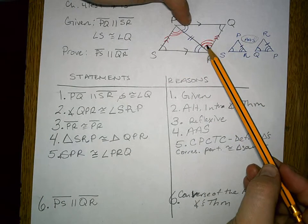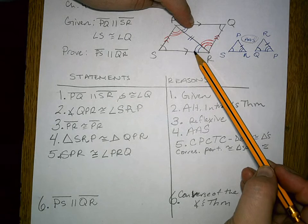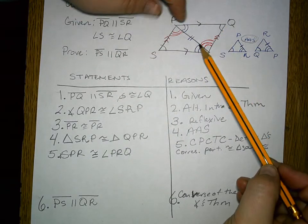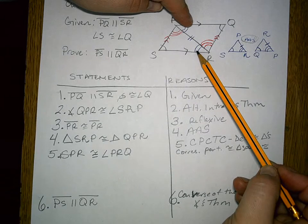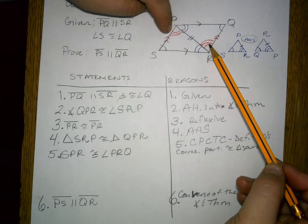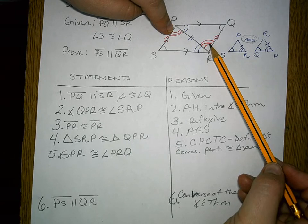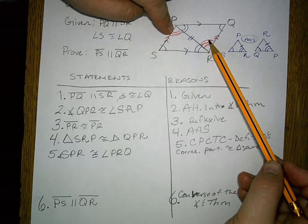If you need to, you might need to write down the given in pencil, what you can imply from the given in one color and then what is going to get you to the proof in a third color just to break down the parts of your proof.